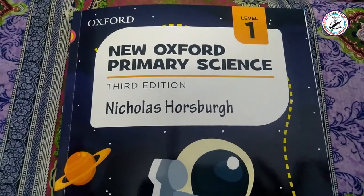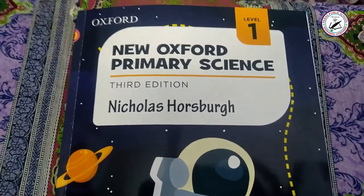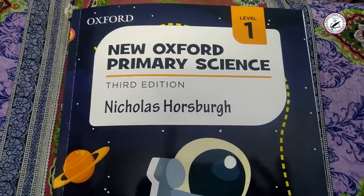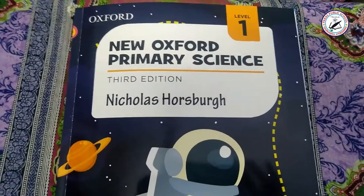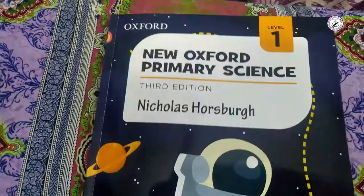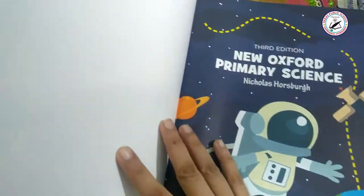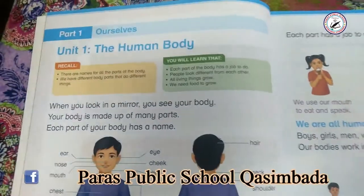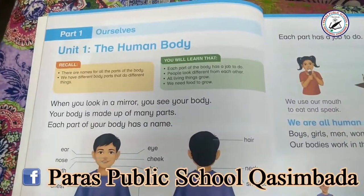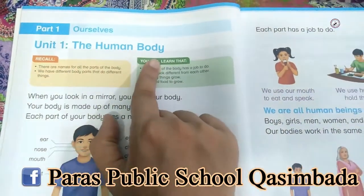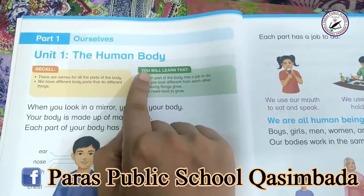Assalamu alaikum to all my dear students. I'm your science teacher — hope you all are fine. Welcome to Level One, New Oxford Primary Science, Third Edition. Today we learn Part One: Ourselves, Unit One: The Human Body — insan ka jisim.